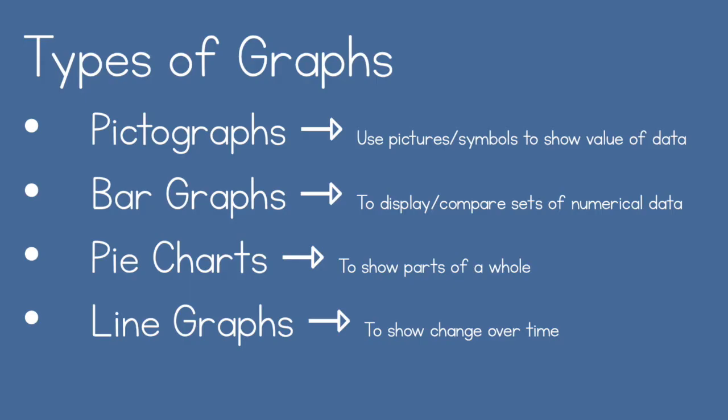We are going to be talking about four types of graphs today, though there are so many different types. The first one is a pictograph, and pictographs use pictures and symbols to show the value of data. The second is bar graphs, which often display or compare different sets of information. Next is a pie chart — yes, like a pie — and this shows parts of a whole, similar to cutting a circle into four pieces and each piece being a fourth. And line graphs is the last one, which often shows change over time.